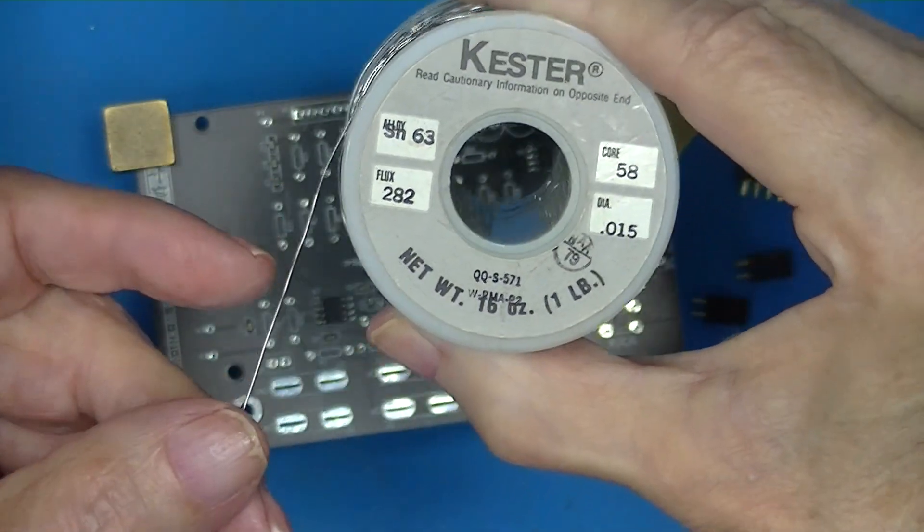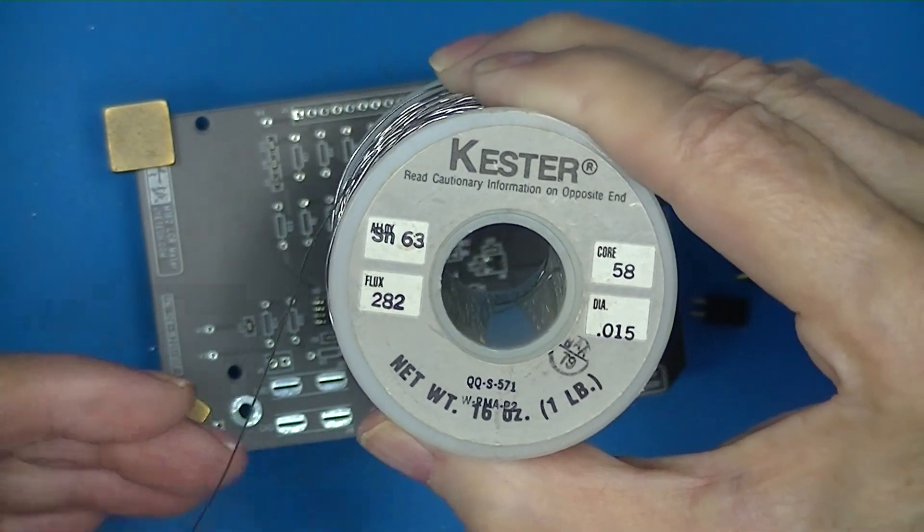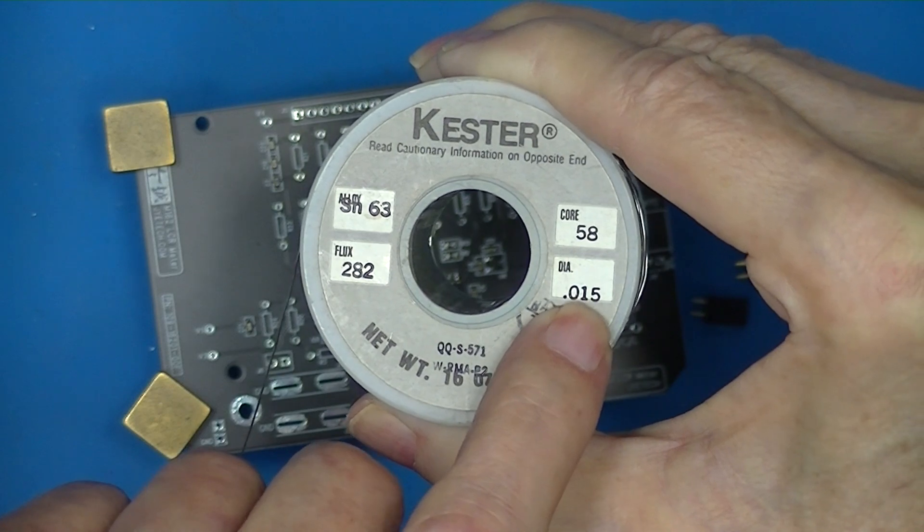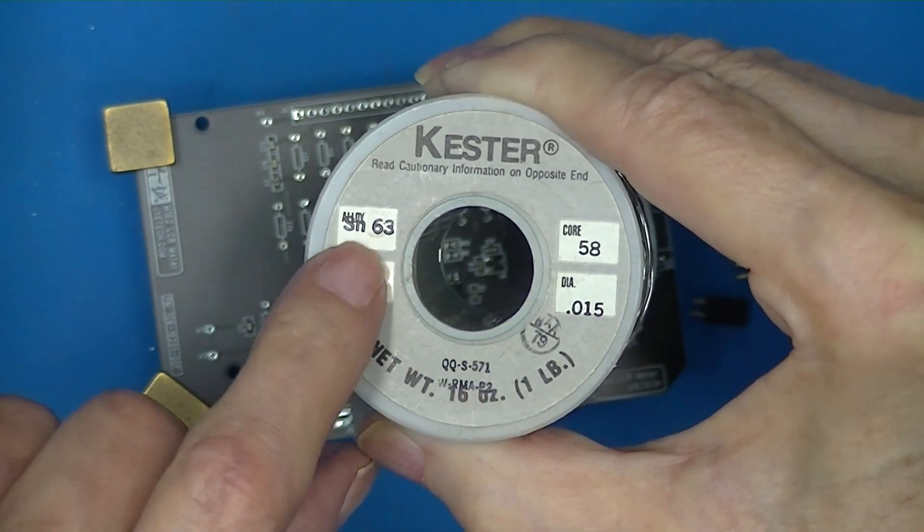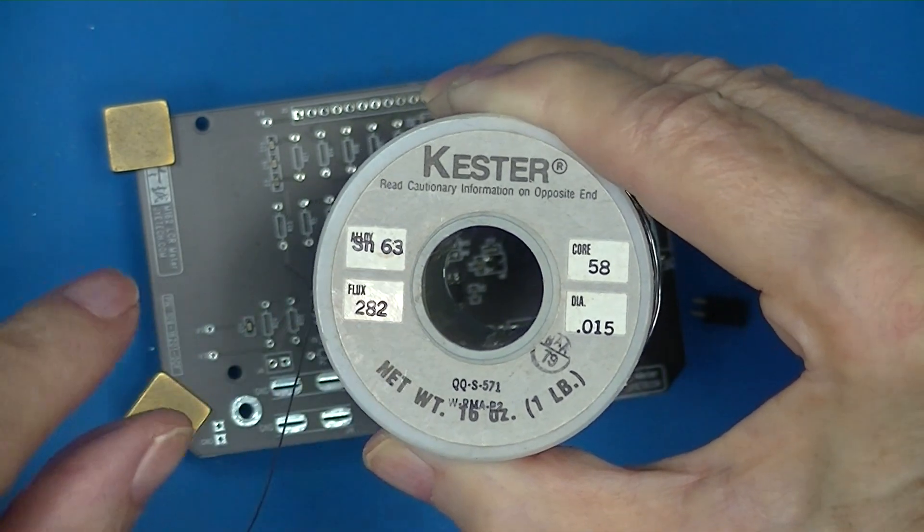I'm going to use a pretty fine diameter, finer than I usually use. So this is 15 thousandths. It's lead solder 63%.